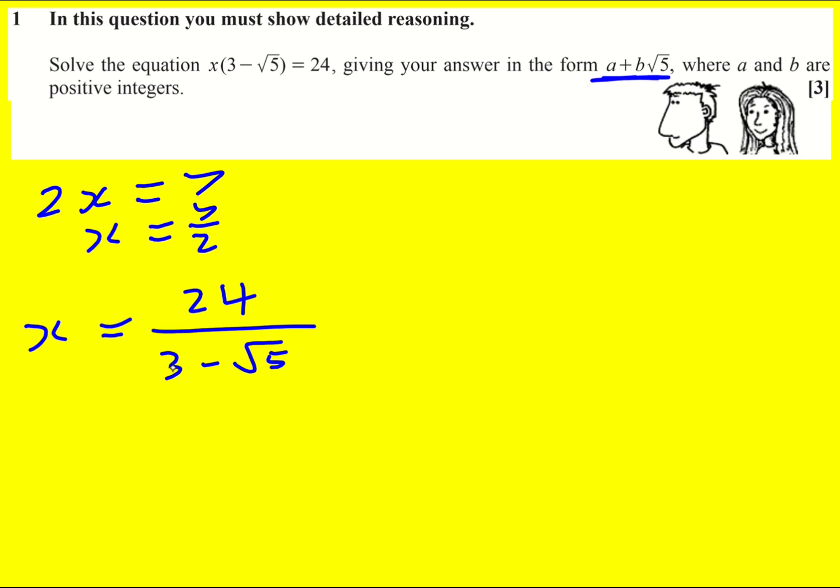This turns into a rationalizing the denominator question because at the moment I've got an irrational denominator and I need to make it rational. I need to get rid of it, sort this out.